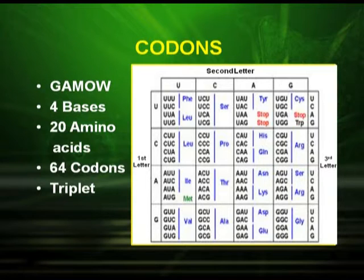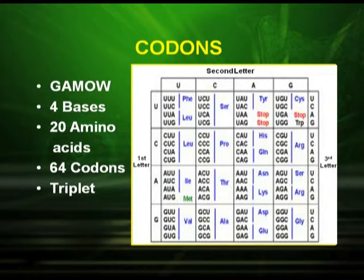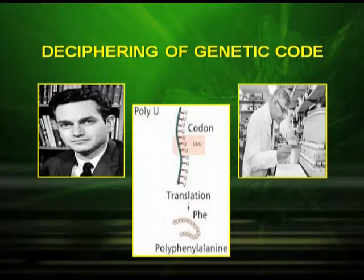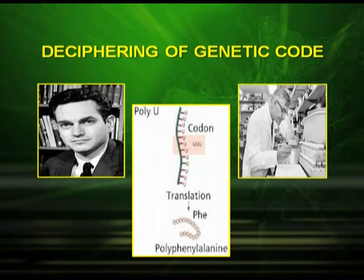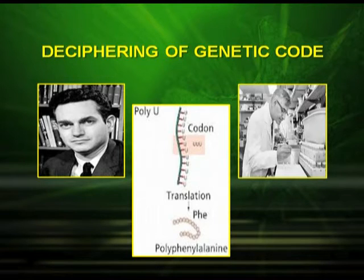For example, triple U codes for the amino acid polyphenylalanine, so a codon is always a triplet. The first picture shows Nirenberg and the second shows Har Gobind Khorana. They were the first to decipher the genetic code — poly U — which represents the codon that was translated to the amino acid polyphenylalanine.